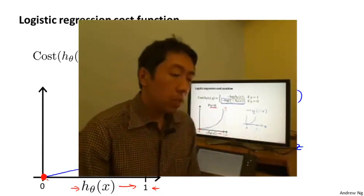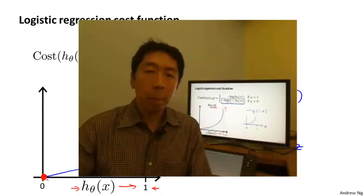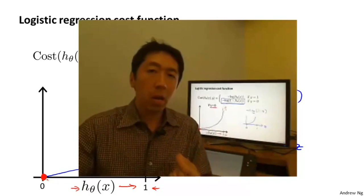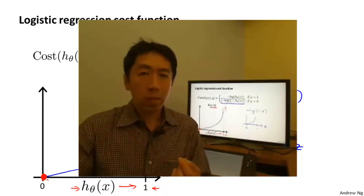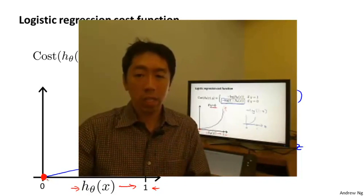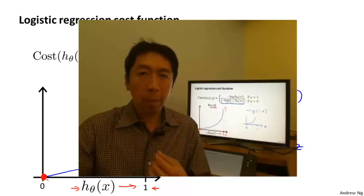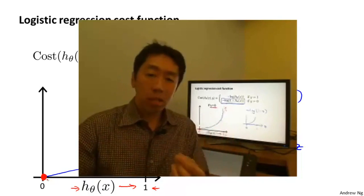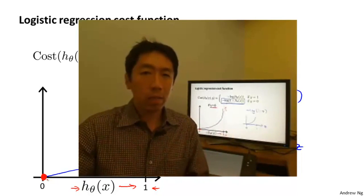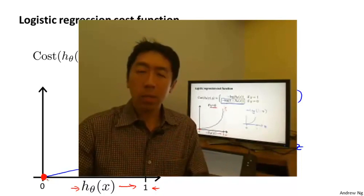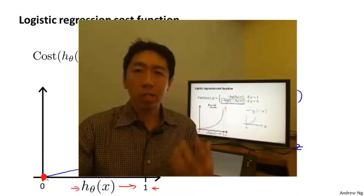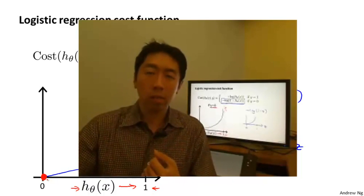In this video, we've defined the cost function for a single training example. The topic of convexity analysis is beyond the scope of this course, but it is possible to show that with our particular choice of cost function, our overall cost function J(theta) will be convex and local-optima free. In the next video, we'll take these ideas, define the cost function for the entire training set, find a simpler way to write it, and then work out gradient descent — giving us our logistic regression algorithm.